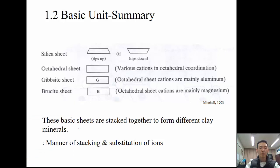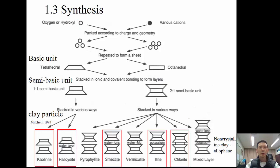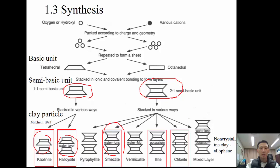Clay minerals form by combining basic units of oxygen, hydroxyl ions, and cations into either tetrahedral or octahedral sheets. A 1:1 semi-basic unit has one tetrahedral and one octahedral sheet; a 2:1 unit has two tetrahedral sheets sandwiching one octahedral sheet. When 1:1 units stack, you get kaolinite or halloysite. When 2:1 units stack, you get smectite, vermiculite, illite, or chlorite.